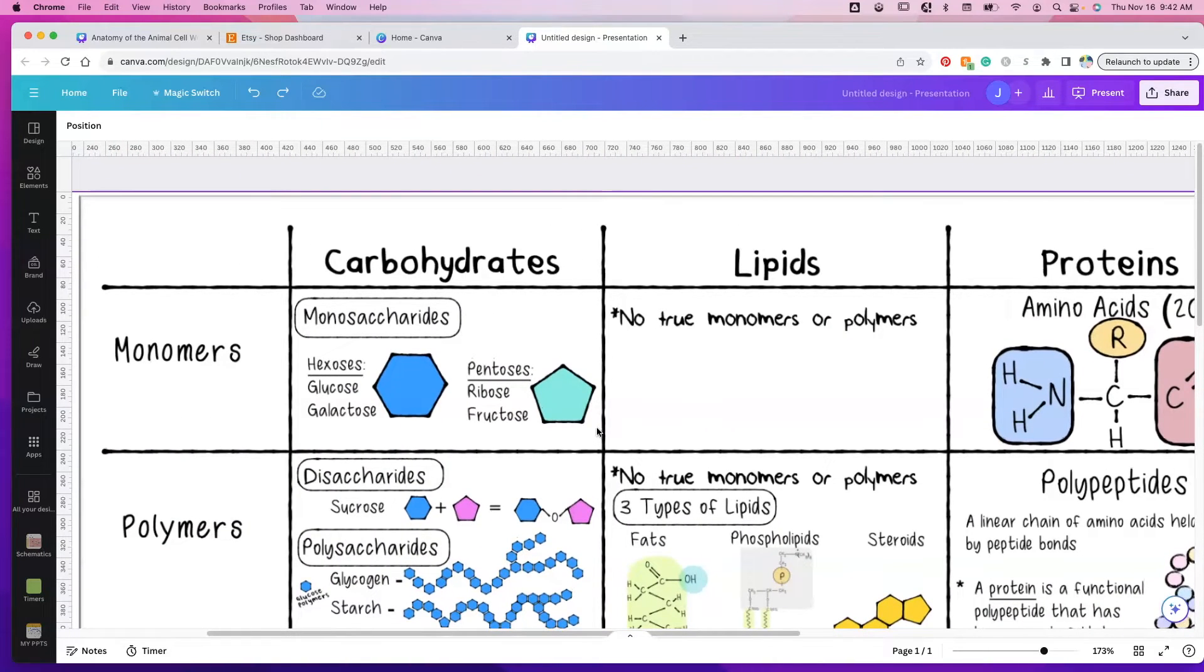We're going to start with monomers and polymers. Of course, the monomers are the building blocks of these larger macromolecules. Mono means one. If we take a bunch of monomers and put them together, we're going to make polymers.